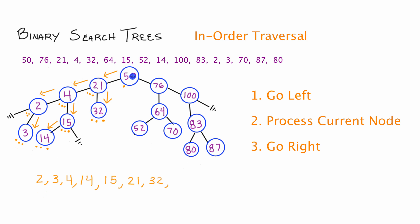Node 21 has completed all three steps, so we fall back to our root node. We've completed step one, so now we're on step two — process the current node. We put a mark for that step and write 50 to process the root. Then we go to step three — go right — traversing down 50's right pointer to node 76. Step one for 76 is go left. We put a dot for step one and go left. Then for node 64 we do step one again — go left — and put a dot and an arrow traversing down to node 52.